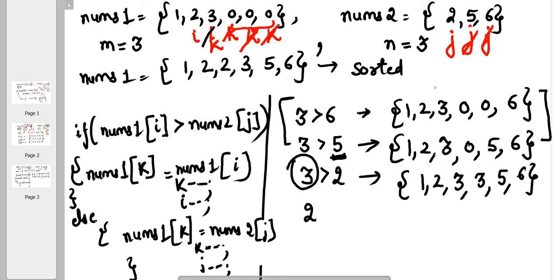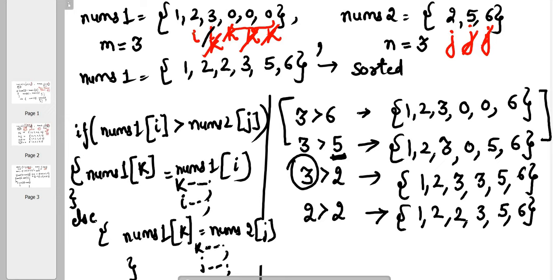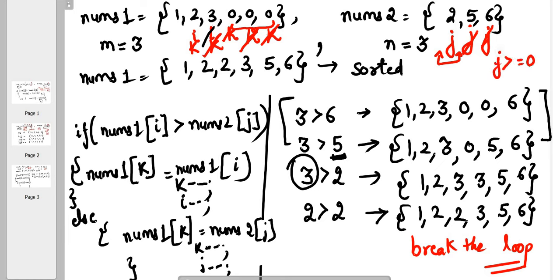Next we compare 2 and 2. 2 is not greater than 2, so it goes to the else part and we put the jth element at the kth position. The array becomes 1, 2, 2, 3, 5, 6. We move k to the next position, but j has no position after this, so we break the loop. The loop runs only while j is greater than or equal to zero and i is also greater than or equal to zero.